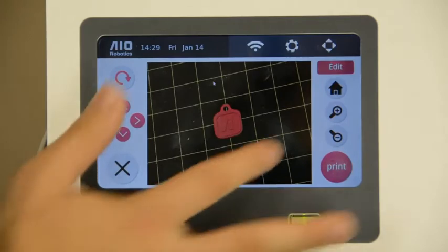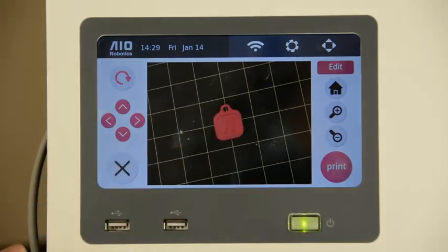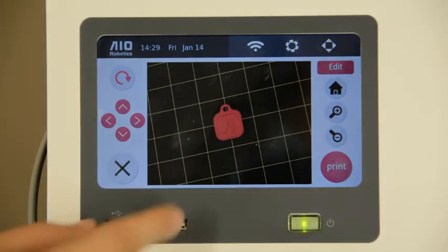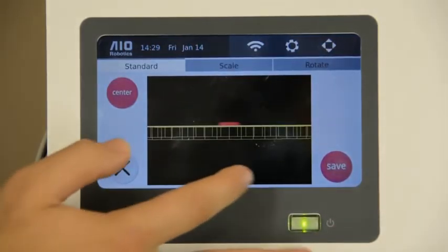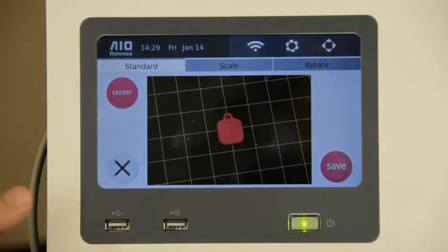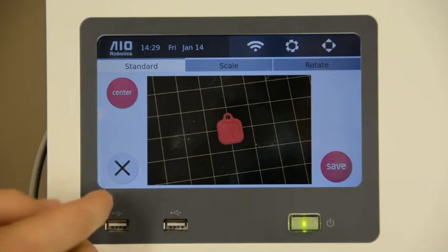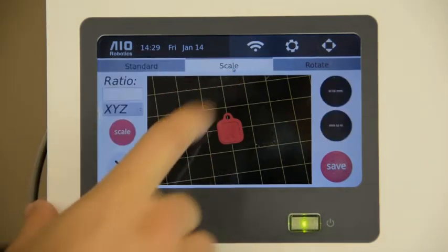This is the keychain that we printed out last time and today we would like to modify it. So we click the edit button at the top of the screen. Here is the raw file. What we would like to do is change the size, so we have to click the scale menu.